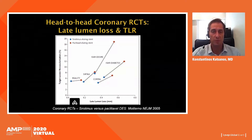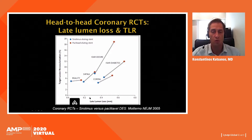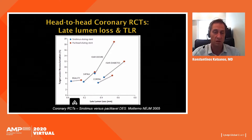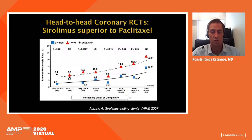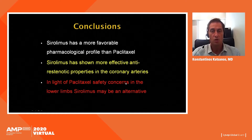In terms of efficacy, comparing paclitaxel-eluting stents with sirolimus-eluting stents from coronary randomized studies — plotting target region revascularization rate against late lumen loss — in all five randomized head-to-head studies, sirolimus was more effective in inhibiting restenosis and reducing target lesion revascularization. An analysis comparing the Cypher sirolimus stent with the paclitaxel-eluting Taxus stent showed in-stent restenosis was higher with paclitaxel compared to sirolimus.